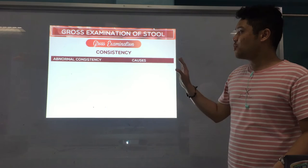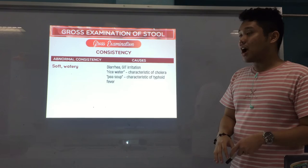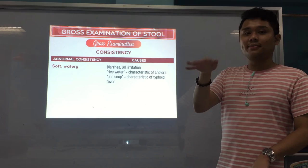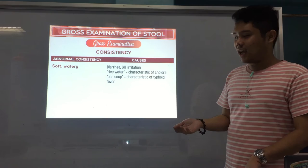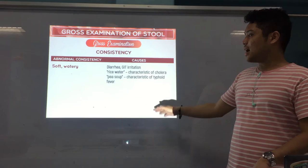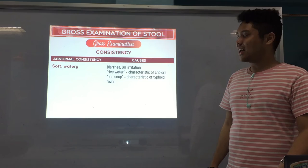Now we go on to the abnormal consistencies. We'll start with soft watery — the cause could be diarrhea or GIT irritation. There are specific types: rice water appearance, which looks like the water from washing rice — that is characteristic of cholera. And pea soup appearance — looks like munggo soup — that is caused by typhoid fever. Please take note: rice water = cholera; pea soup = typhoid fever.